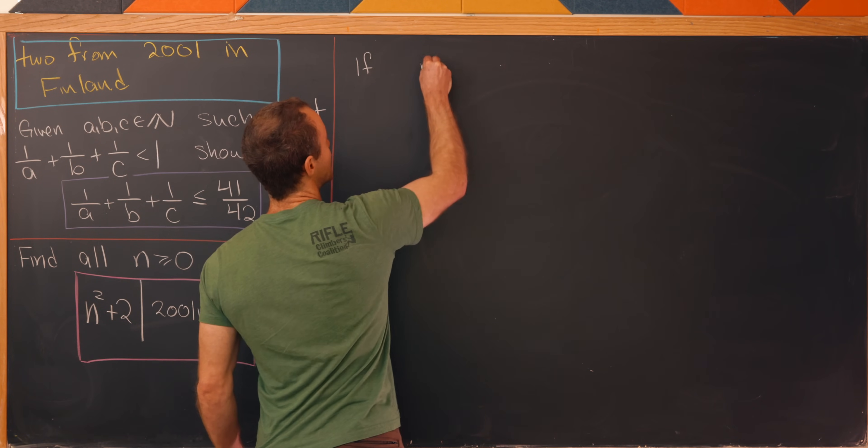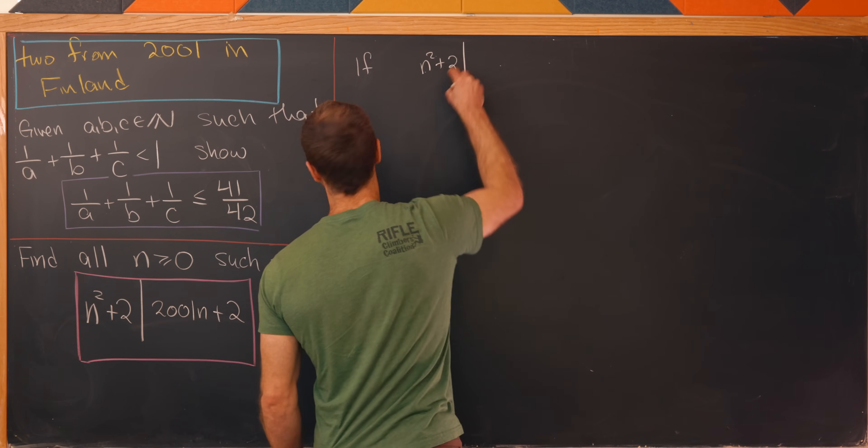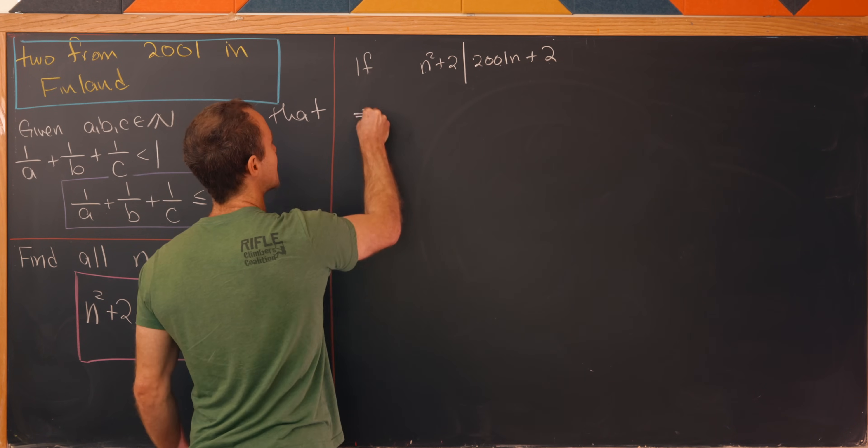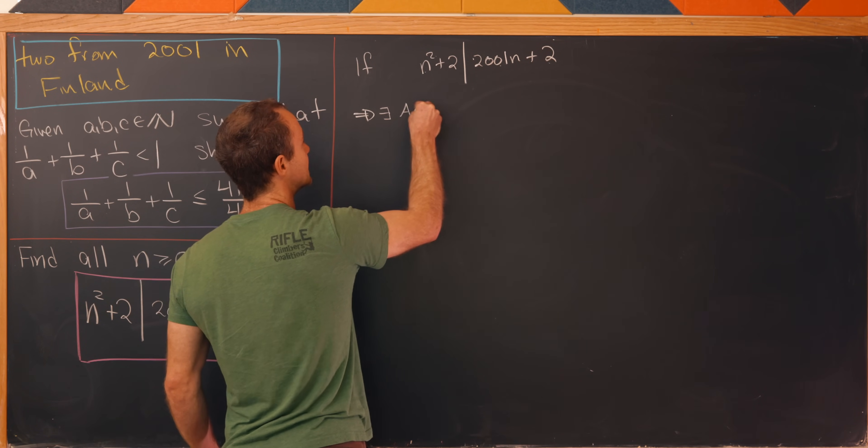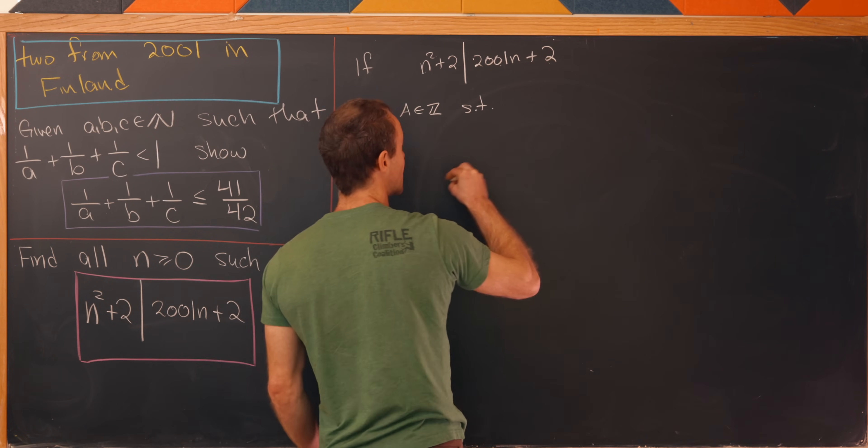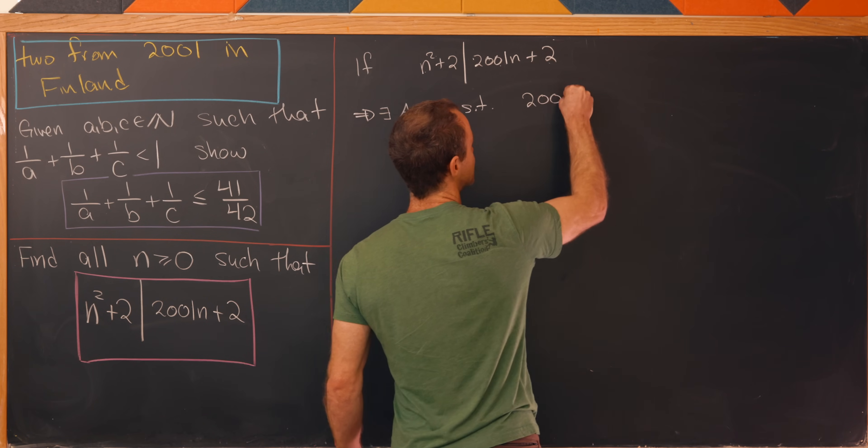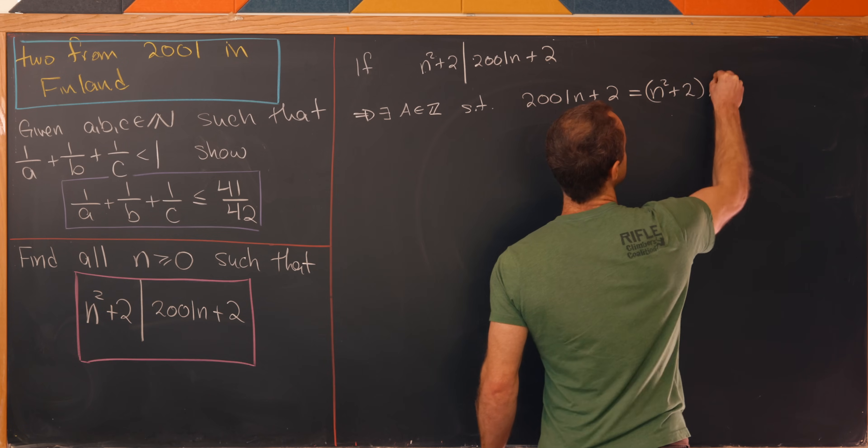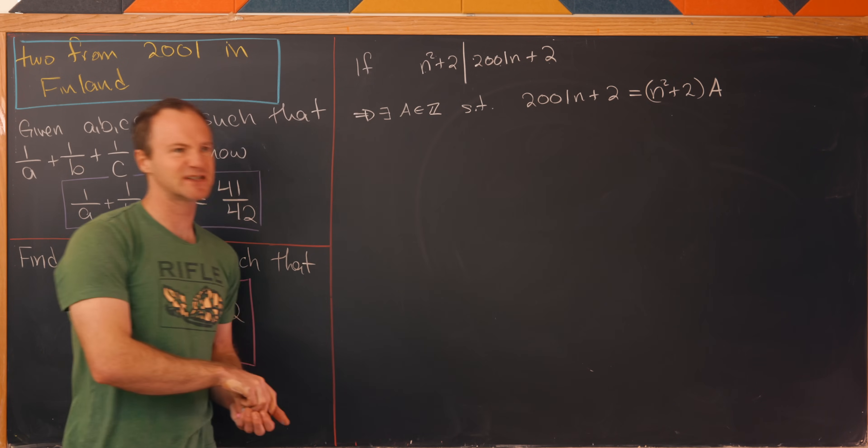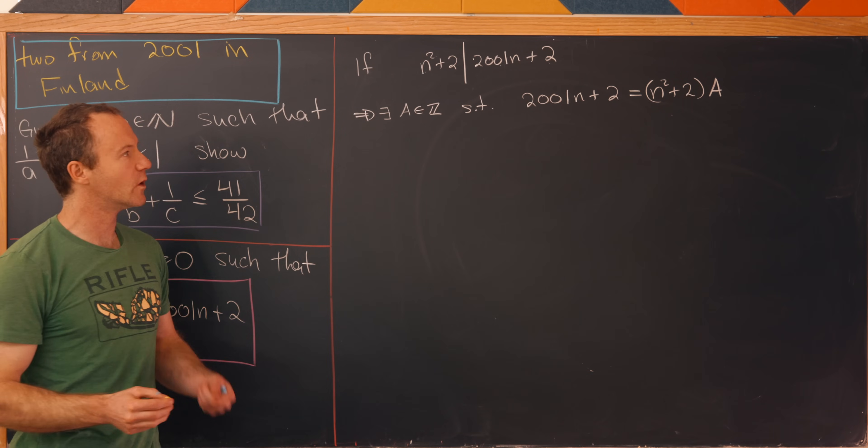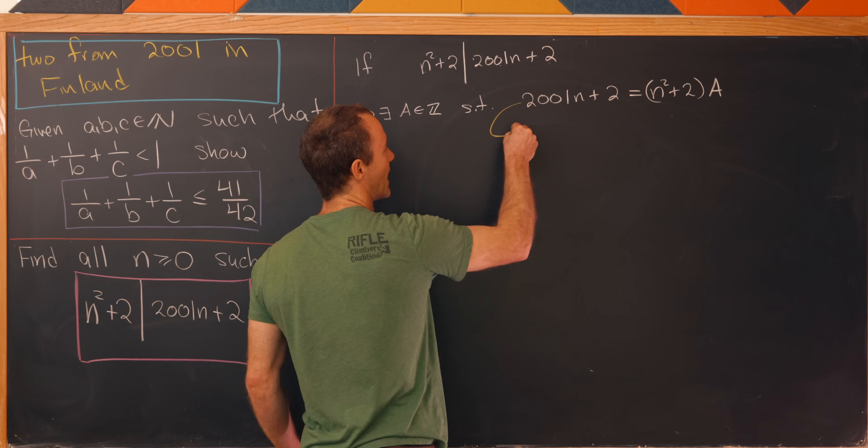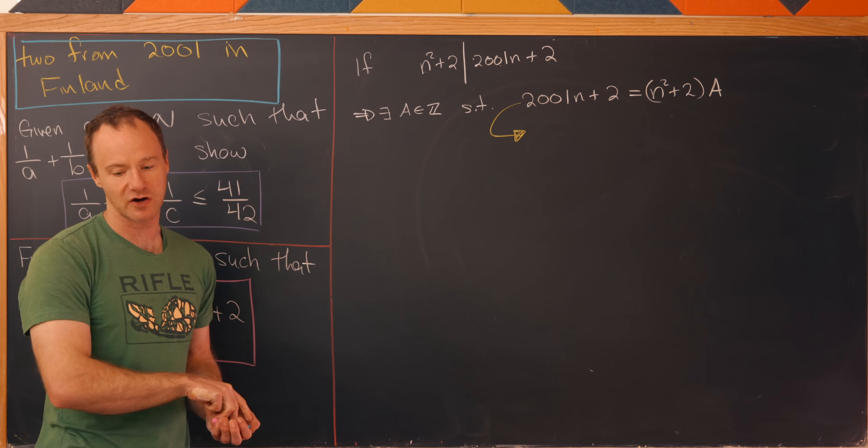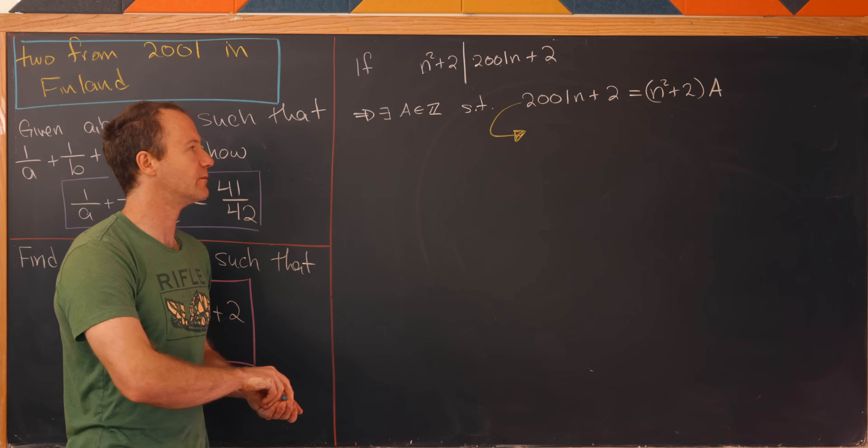So if we have n² + 2 dividing into 2001n + 2, then that tells you that there exists an integer which I'll call capital A such that 2001n + 2 equals n² + 2 times this capital A. That's just the definition of divisibility here. But now what I'd like to do from here is multiply both sides of this equation by something that will aid our simplification. So what will we multiply by?